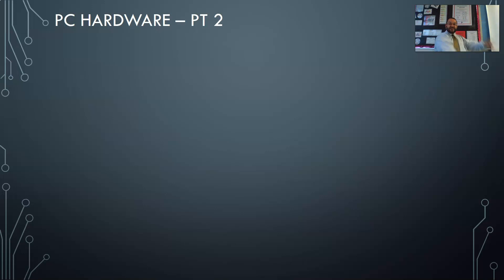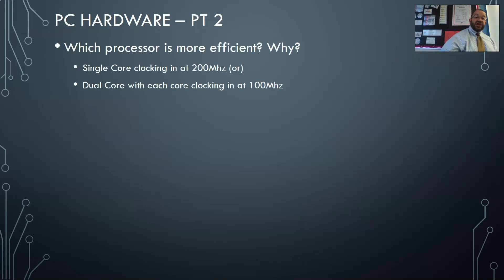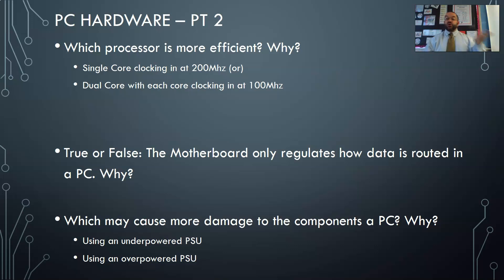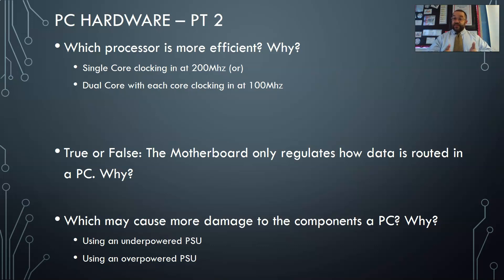That brings us to the end of this lesson, done in less than 25 minutes. For your assessment, you should be able to answer which processor is more efficient and explain why — think about the multiple workers analogy. Answer the true or false question on the slide. And based on what was covered about power supplies, explain the difference between one that's more powerful than needed versus one that's less powerful than needed, and which might cause more damage — remember, damage usually comes from heat.